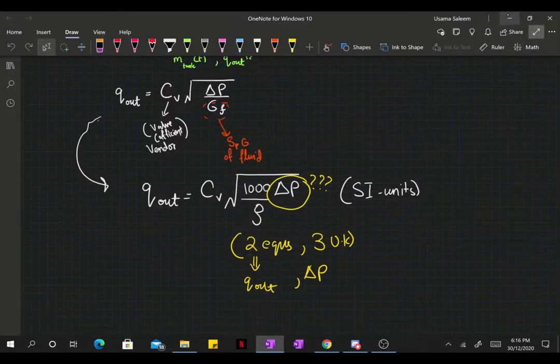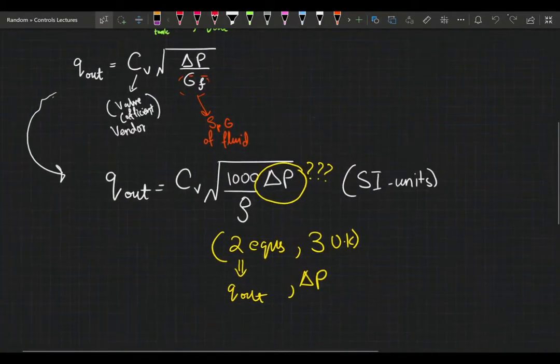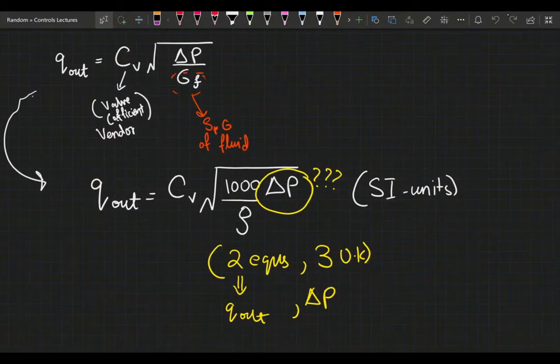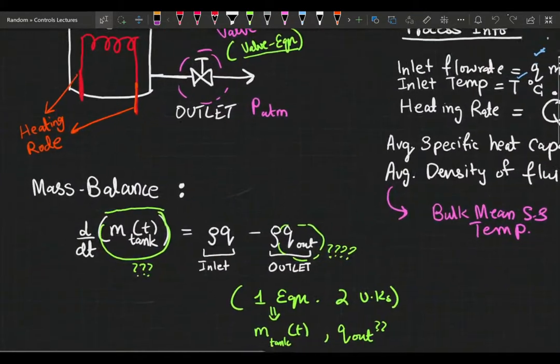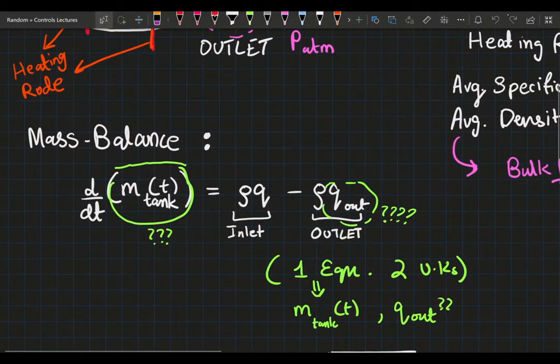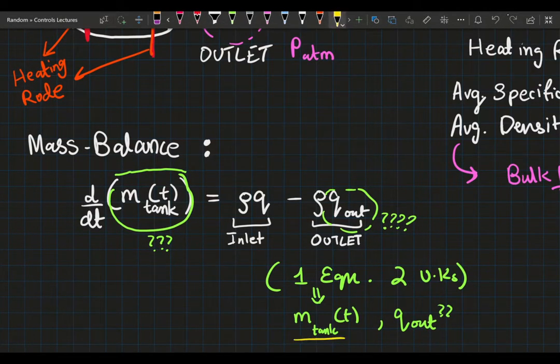Okay everyone, now this is the second part of our stirred tank vessel problem. So far, just to give you a recap, we started off with a mass balance and that gave us one equation and two unknowns, the mass in the tank and the outlet volumetric flow rate.